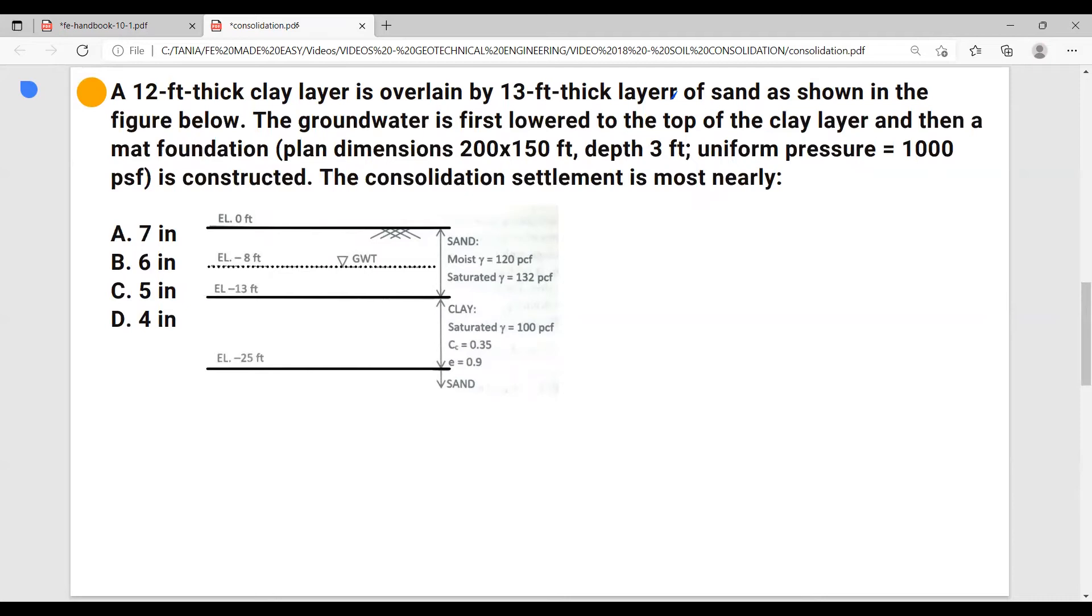So we have the existing situation where the water is 8 feet below the ground, as shown here in this drawing. And then what they're intending to do is to lower the water all the way to the level where the clay layer starts, and install a mat foundation 200 by 150, three feet below the ground. And we have to calculate the consolidation settlement, meaning the change in clay layer height.